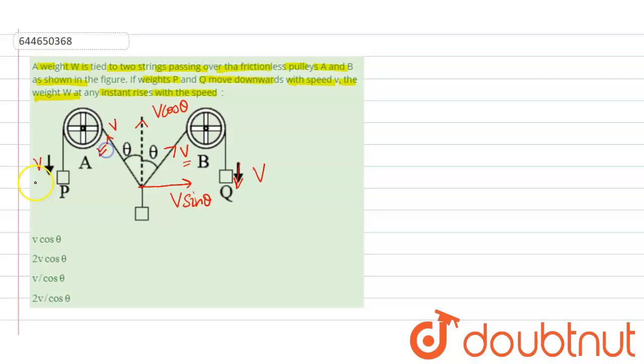Similarly, we take the component of this speed also v. First component is this direction, v sin theta, and the other component is in this direction, that is v cos theta.